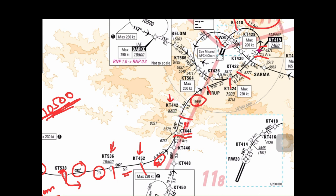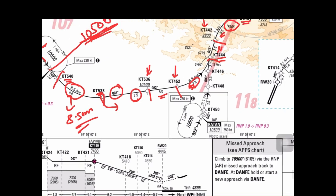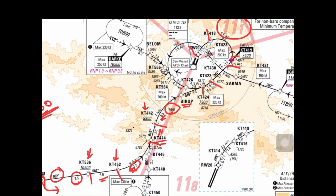From there, you make a 6.5 nautical mile arc at 7 degrees and report at the next waypoint. Then fly heading 074 degrees for 3.9 nautical miles, reporting at KT 424. This is a very important waypoint — KT 424 is an IF (Instrument Fix). I'll explain later why this is the most important point.